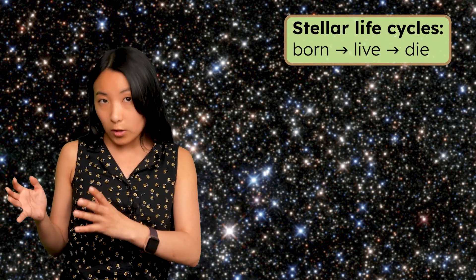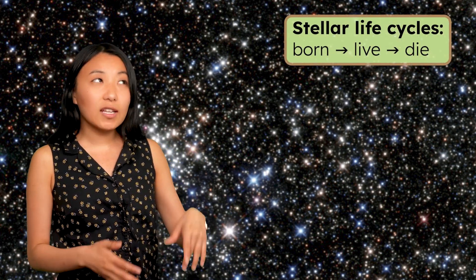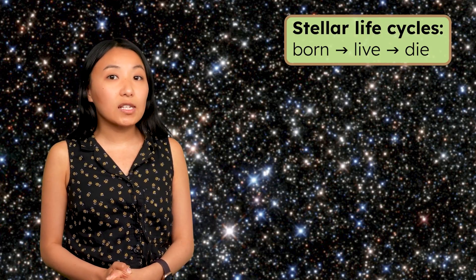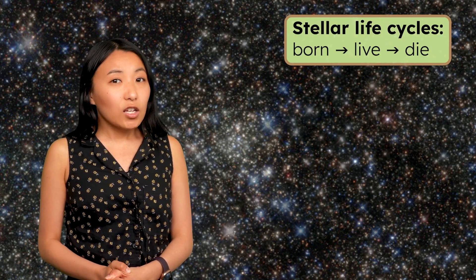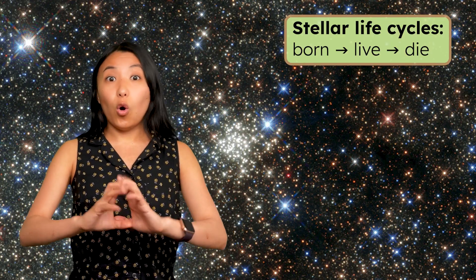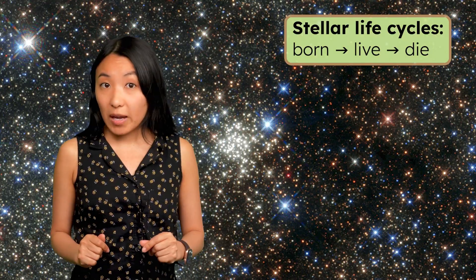When you see that blanket of stars spread across the night sky, are you seeing something that is static and unchanging? Or are you just seeing a snapshot of what the universe looks like right now? While stars aren't alive in the way people or animals are, they do go through a life cycle. They're born, they live, and eventually they die. So if you were to come back to your favorite stargazing spot in a few billion years, you'd likely see a very different set of stars in the sky and have to invent a whole new set of constellations to match.